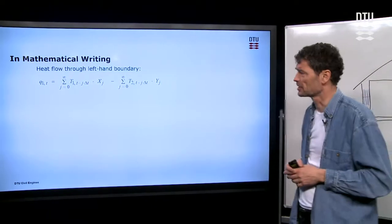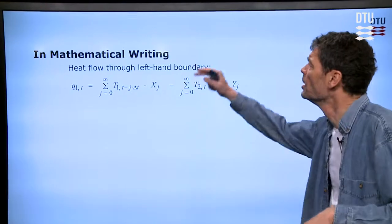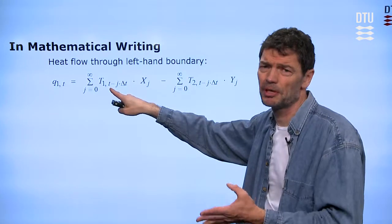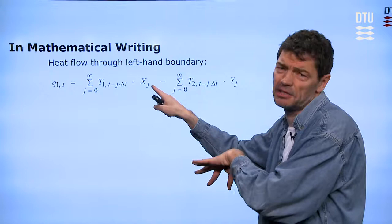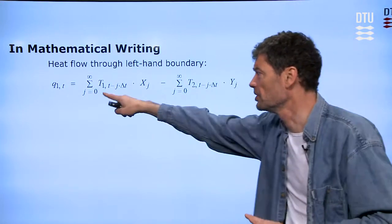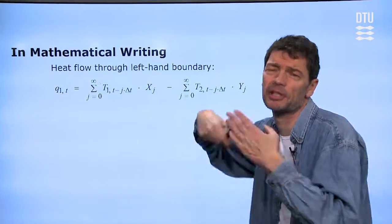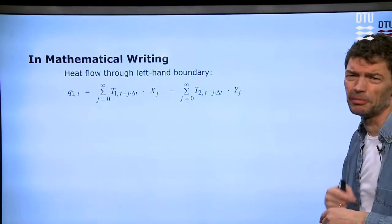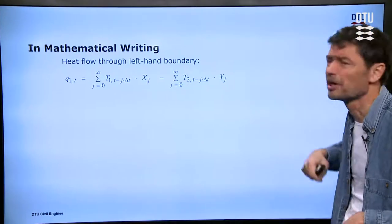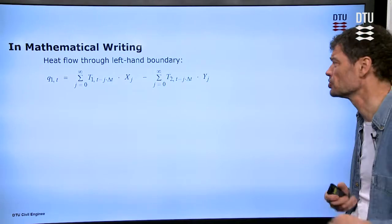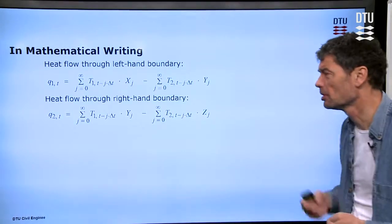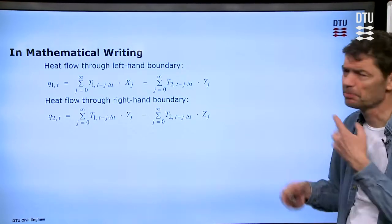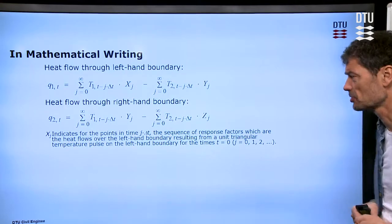We can write it all up mathematically. So, this will be my last slide. Here the heat fluxes, on one side, as a function of temperature, it's a summation of the temperature impulses that we had on one side times the X factors, that time series of X factors on that side. We add up infinity, in principle, but in reality only a certain few number of hours. And then we should subtract the impulse from the temperature on the other side of the wall, multiplied with the Y factors that are across the wall. And then we do the same for the other side of the wall, the right-hand side, in similar writing.